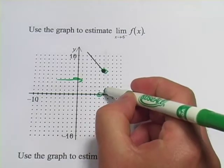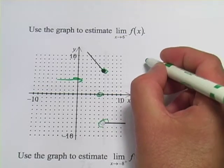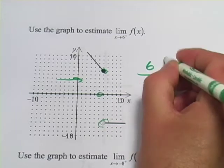This value is 1, 2, 3, 4, 5, 6. That's 6. So, the limit as x approaches 6 from the left of f of x is 6.